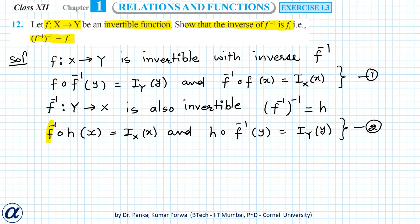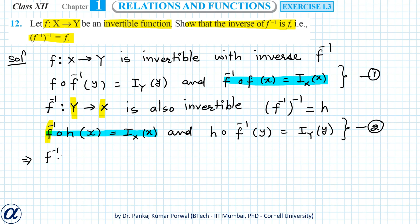Note that the domain for f inverse is Y and codomain is X. So from equations one and two, I have f⁻¹ ∘ h(x) equals the identity function of X, and f⁻¹ ∘ f(x) equals the identity function of X. From these two I can say f⁻¹ ∘ f(x) equals f⁻¹ ∘ h(x).